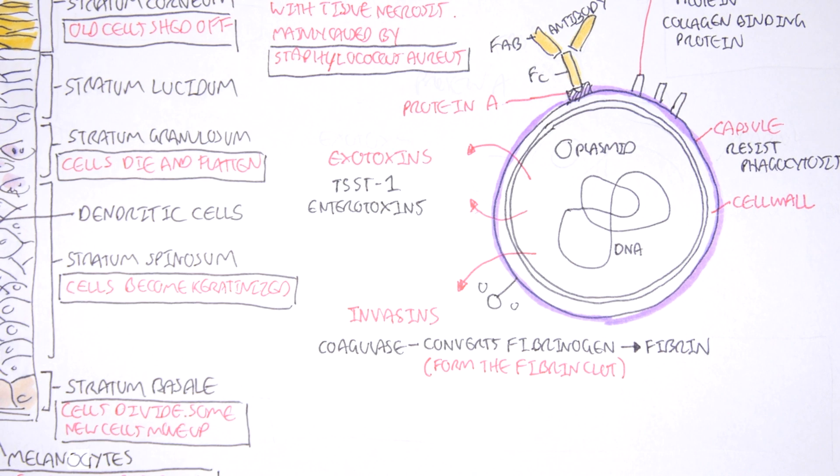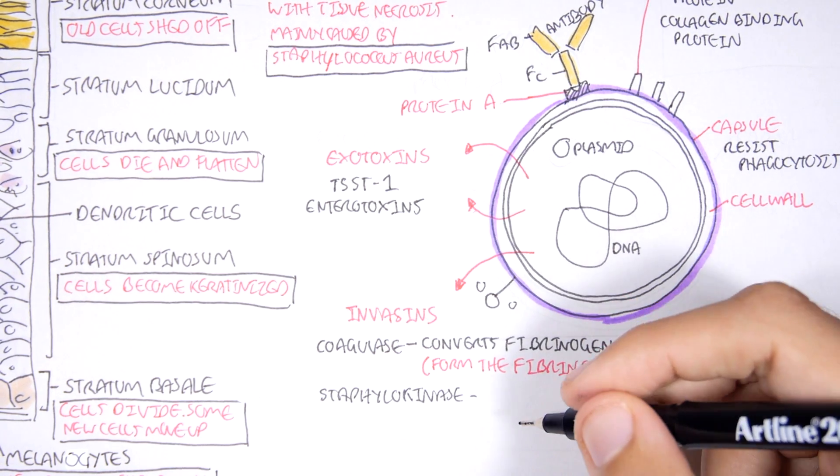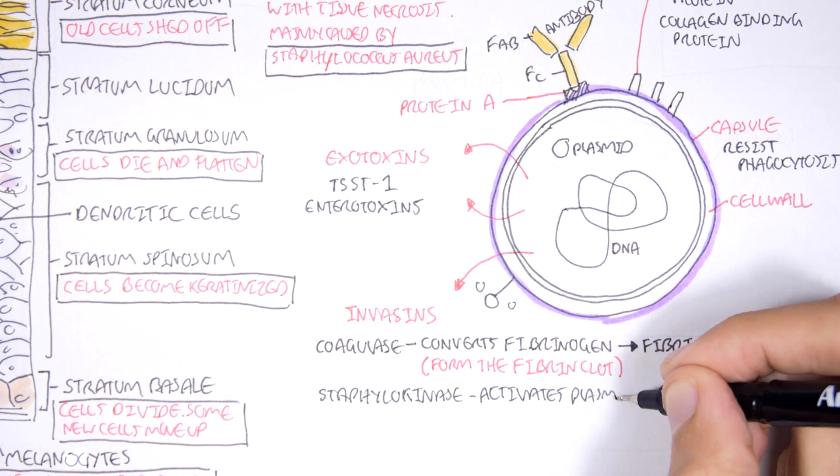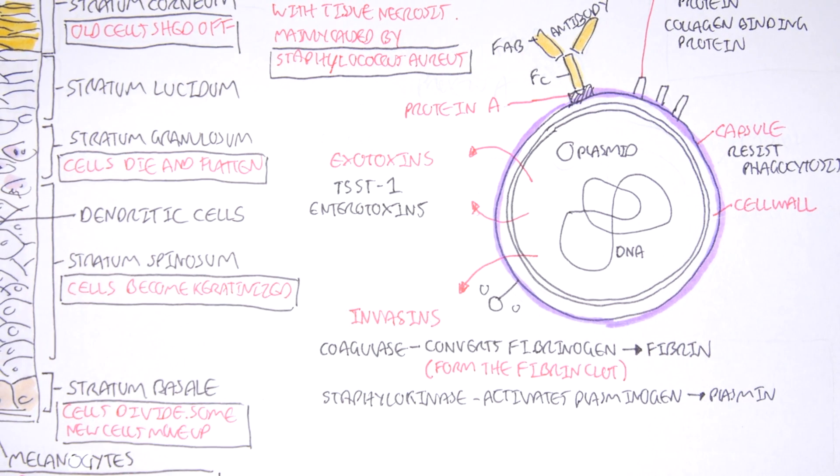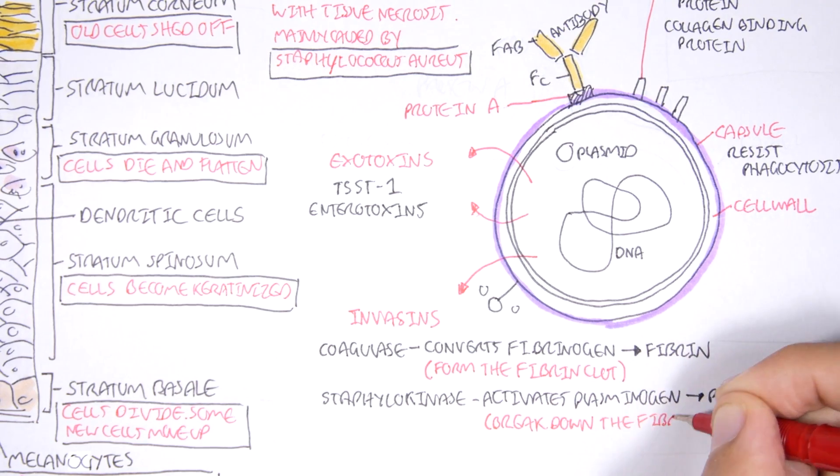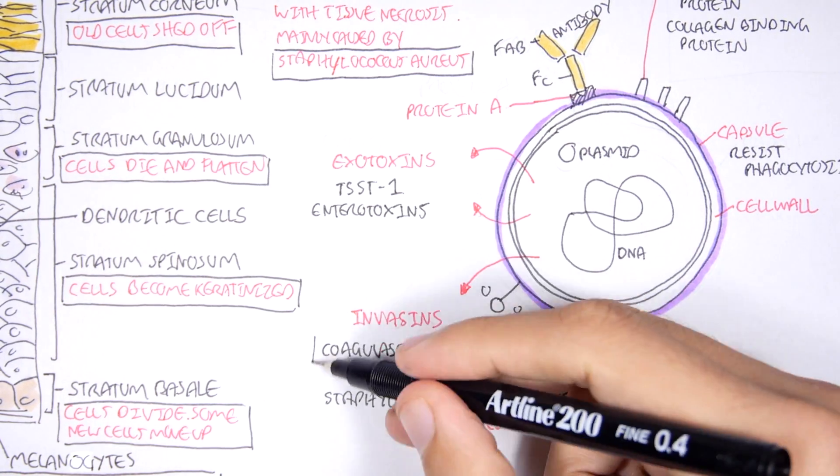And then it has the other invasin known as staphylocokinase. Now this enzyme activates plasminogen and converts it to plasmin, and this helps in breaking down fibrin clots.